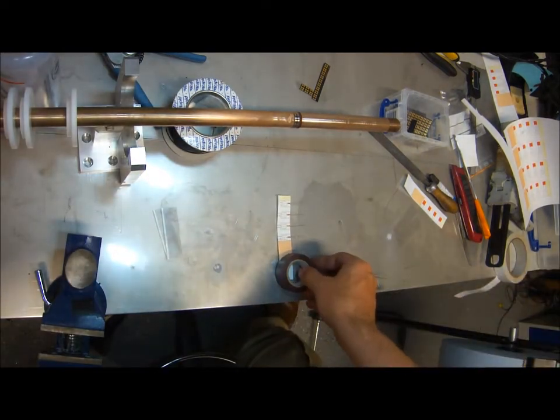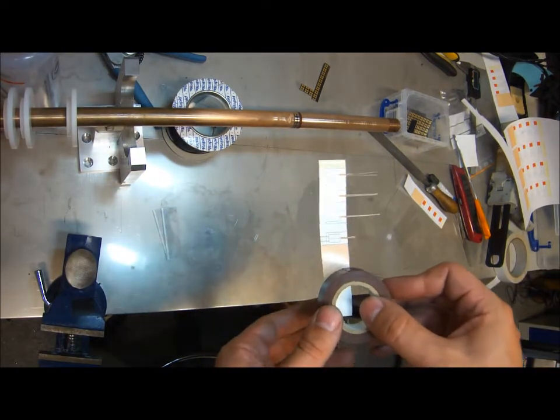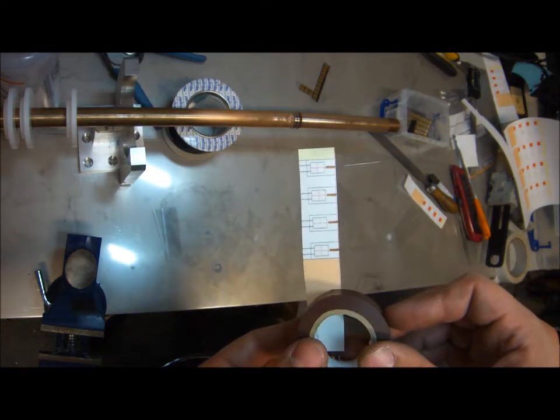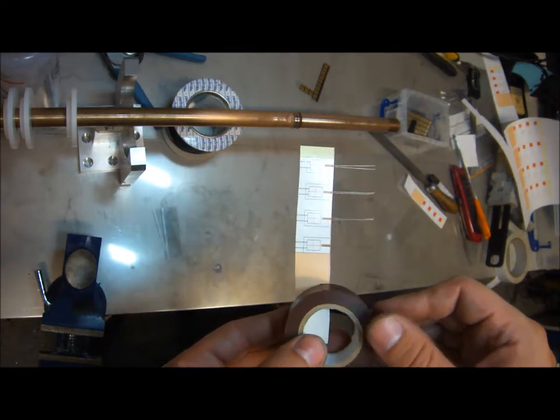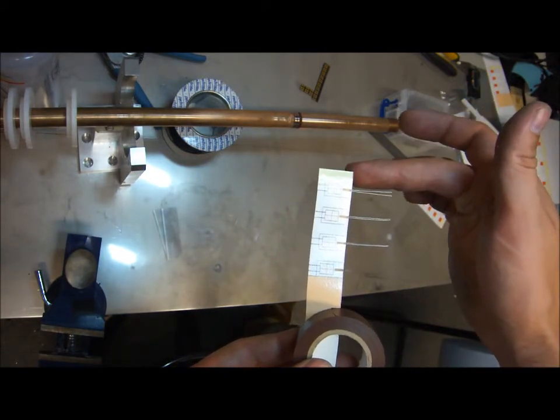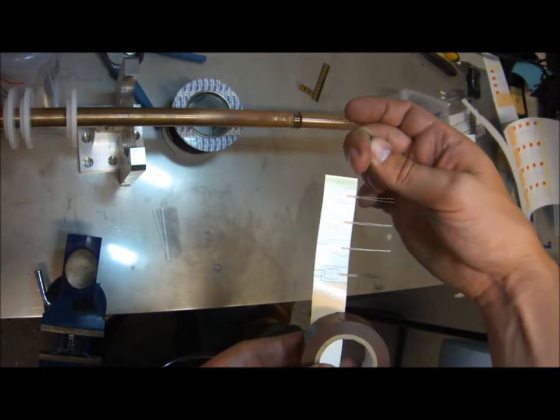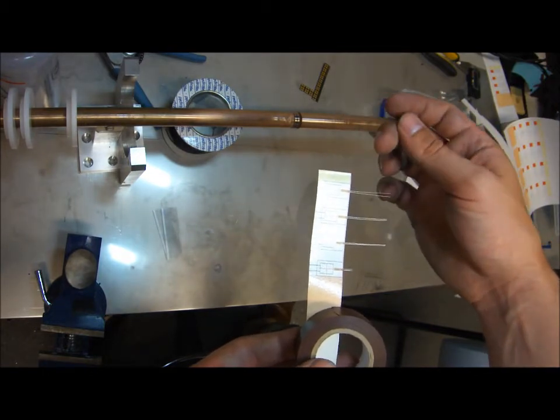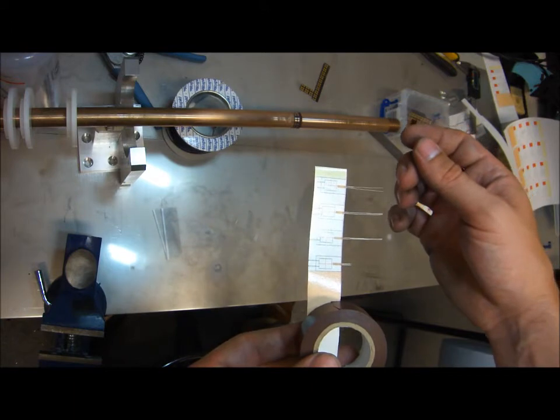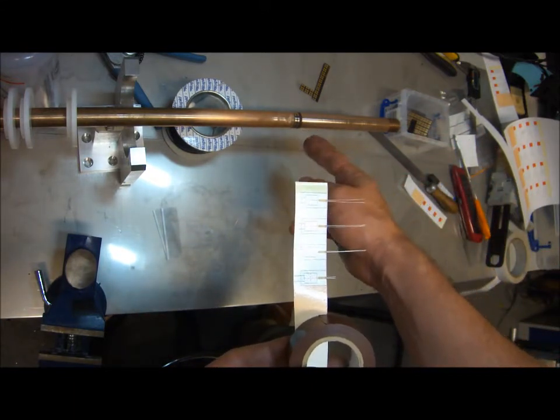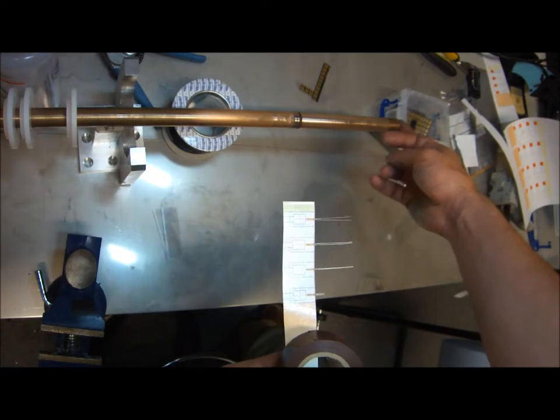Now you're finished and all the string gauges are attached. Now it's important to measure the distance between this edge of the paper and the center line of the string gauge, as otherwise we won't have any way of defining where the string gauge sits with respect to the start of the bar.